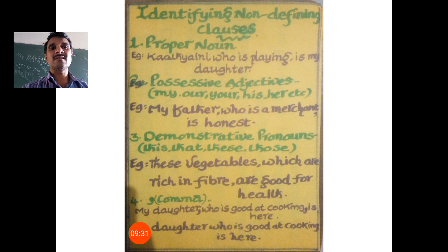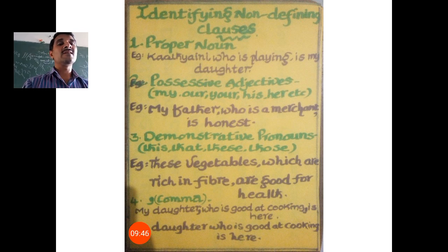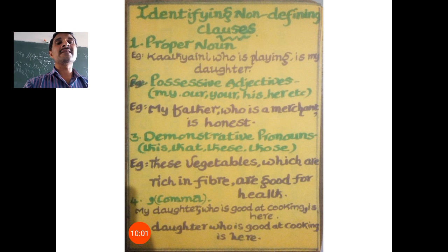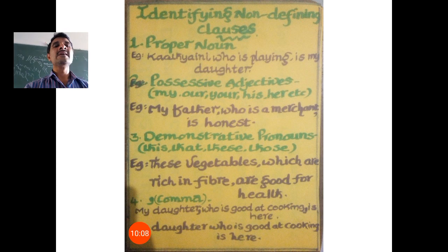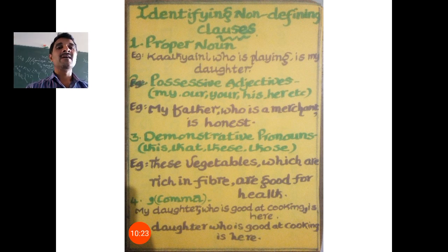The third clue: demonstrative pronouns — this, that, these, those. For example, 'These vegetables, which are rich in fiber, are good for health.' Remove 'which are rich in fiber' and read: 'These vegetables are good for health.' That's enough. By adding 'which are rich in fiber,' the relative clause gives additional information about its antecedent, 'these vegetables.' Here, 'which' is the relative pronoun. Note: 'who/whom/whose' are used for persons, and 'which' is used for things.